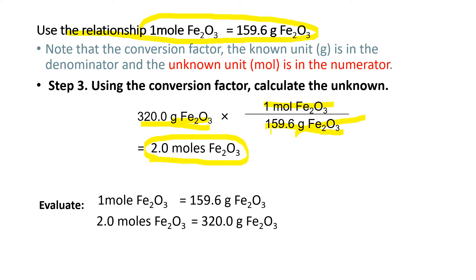Let us evaluate if it makes sense. 1 mole of iron oxide has a mass equal to its molar mass — 159.6 grams of iron oxide. So 320 grams, which is twice the molar mass, is equal to 2 moles. And it makes sense.